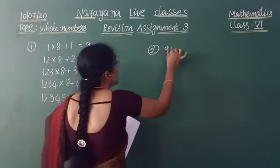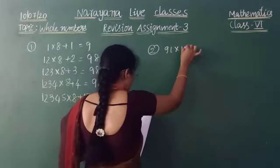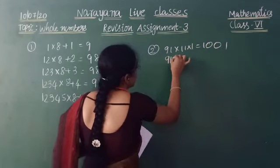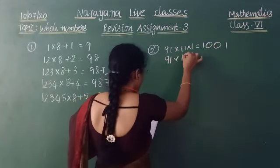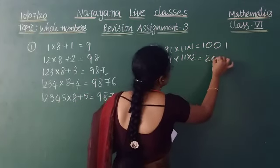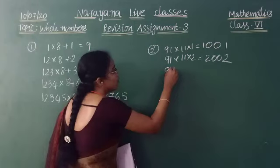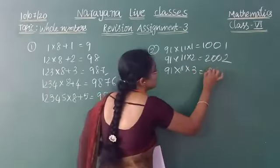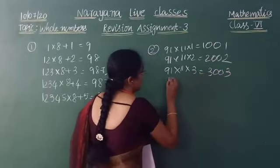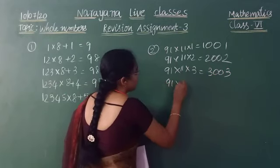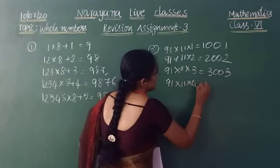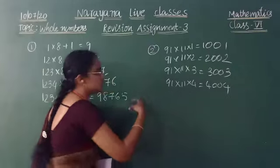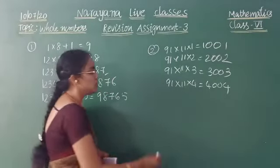The second question is: 91 × 11 × 1 = 1001; 91 × 11 × 2 = 2002; 91 × 11 × 3 = 3003; 91 × 11 × 4 = 4004. They have given 4 steps and we have to find the next 2 steps.